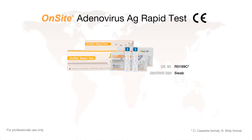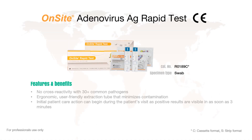The CE-marked on-site adenovirus antigen rapid test features identical technology as our on-site RSV antigen rapid test, and therefore many of its high-quality benefits are shared — such as no cross-reactivity with over 30 common pathogens, a user-friendly extraction tube, and positive results visible in just 3 minutes.